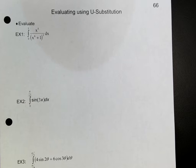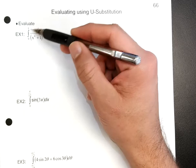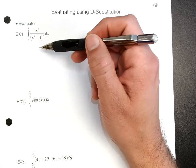Alright guys, by now you should be pretty used to using u-substitution to integrate. Now we're going to do exactly the same thing as what we did in problems 64 and 65, but notice that now we have a definite integral, meaning that once we find the integral, we're going to integrate between 0 and 1.